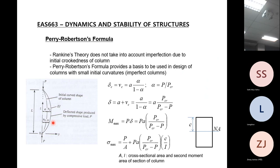The Perry-Robertson formula starts with the assumption that the column is already initially bent. The mid-height deflection is 'a', so this imperfection means the column already has an initial curved shape. When you apply loading it will bend more, so there is additional bending on top of 'a'. That's why the formula we get at the end can be used to predict the allowable load on an imperfect column.